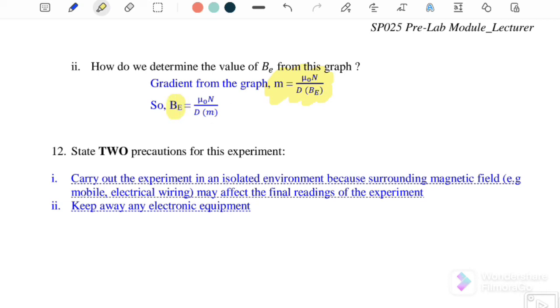State two precautions for this experiment. Number one: Carry out the experiment in an isolated environment because the surrounding magnetic field, for example from mobile devices or electrical wiring, may affect the final readings of the experiment. Number two: Keep away any electronic equipment, because when current flows through a conductor it produces a magnetic field.